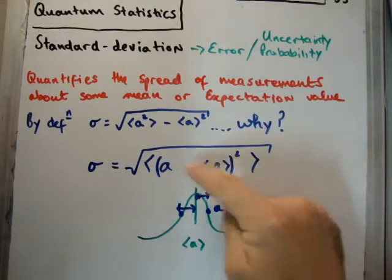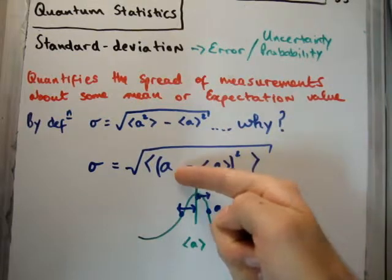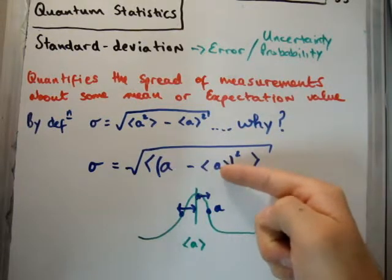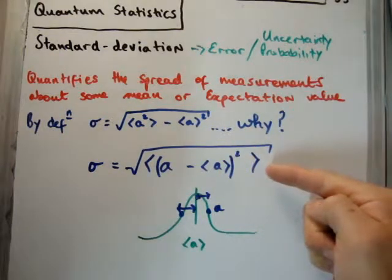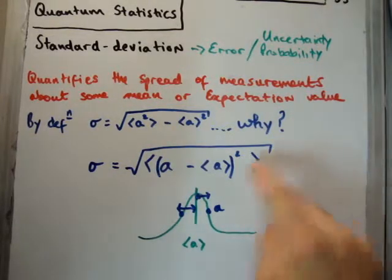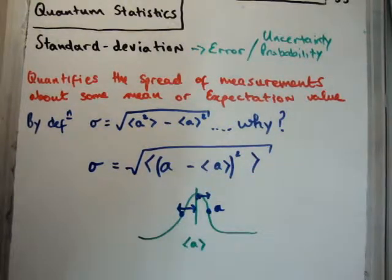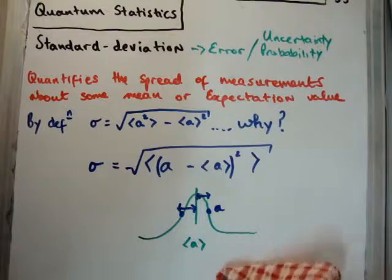So, what we do is we find the distance, or the average distance, of your value from its average. You square it in order to get a positive value, and then take the square root again. And now notice, of course, we're taking the average inside of this as well. So, that, hopefully, makes a bit of sense to you.